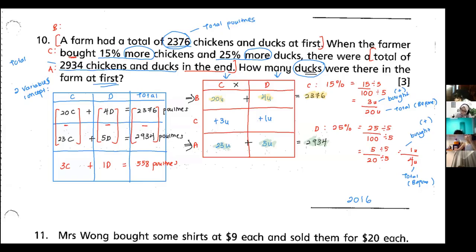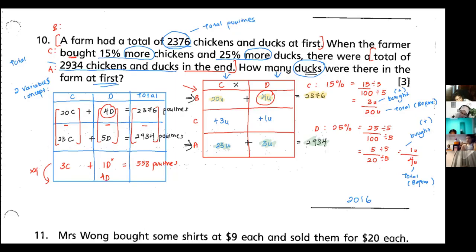We go back to focus on the ducks. I want to make both equations have 4 ducks so I can eliminate the duck term. I multiply the difference equation by 4: 3×4 = 12 chicken, 1×4 = 4 duck, and 558×4 = 2232 poultries. So the new equation is: 12 chicken + 4 duck = 2232.